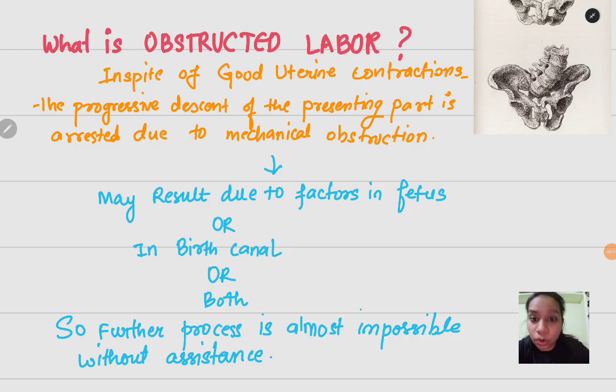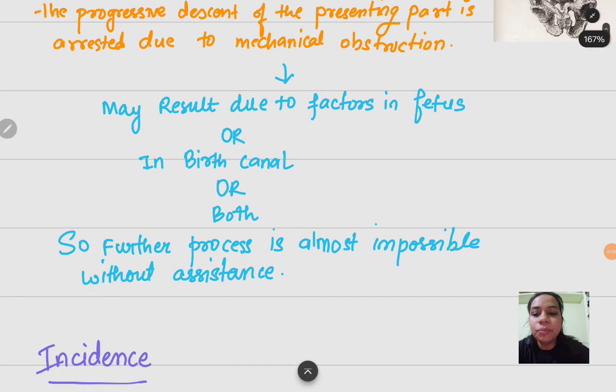A normal labor progressing, if any obstruction is coming mechanically, whether it be the fetus side or the mother side, that is the birth canal or both, that is called obstructed labor. So further progress is almost impossible without any assistance.